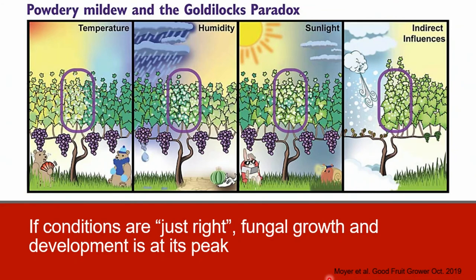The optimal environmental conditions for powdery mildew development encompass what is referred to as the Goldilocks paradox. If conditions are just right, as shown in the purple circles in this image, fungal growth and development is at its peak. Temperatures between 50 and 90 degrees Fahrenheit result in the most infections, with the shortest generation time at about 81 degrees Fahrenheit. At temperatures above 90 degrees Fahrenheit, a single heating event can kill powdery mildew colonies, and multiple heating events can also delay sporulation.